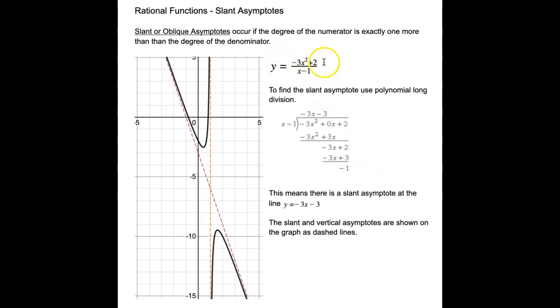And here's the function we're going to consider: -3x² + 2 divided by x - 1. And to find the slant asymptote, we're going to need to use polynomial long division.